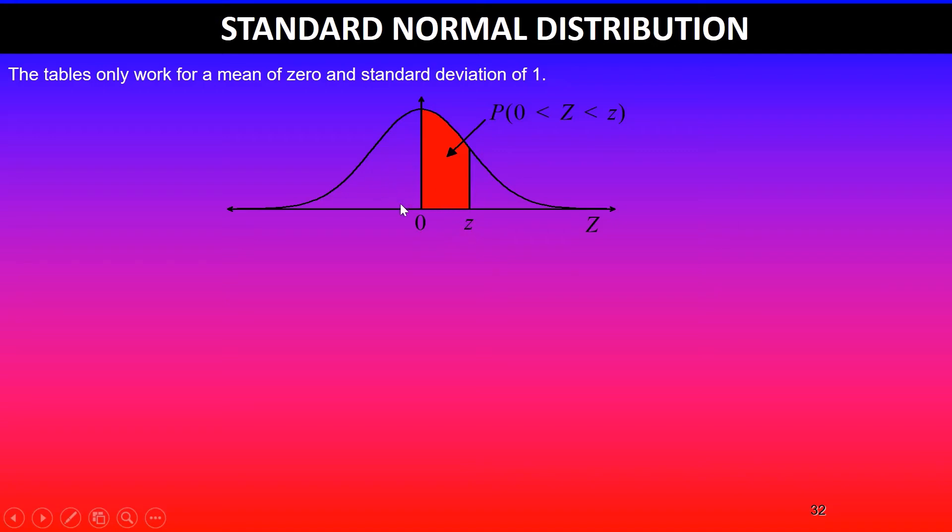And we can use the properties of bell-shaped curve symmetry to find the probability if it is below 0. In some instances, that value will be negative. So we can use symmetry to find those probabilities as well.